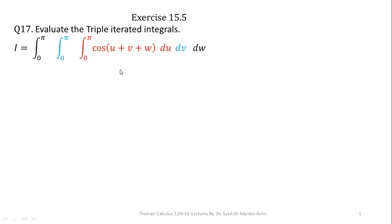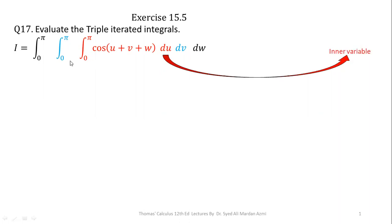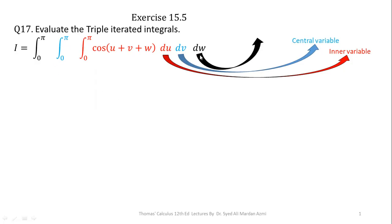In triple integrals, we have three variables involved for each sign of integration. Which variable is associated with which sign of integration — we will learn that now. You can see variable u, which is with the differential du, is called the most inner variable, and the limits of inner variable u are 0 to pi. The variable with dv written in the center is called the central variable, and the limits of v are 0 to pi. The variable written with dw on the most outer side is called the outer variable, and the limits of w are 0 to pi on the most outer integral.